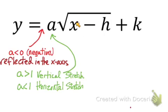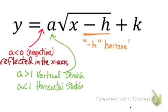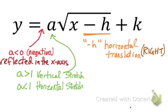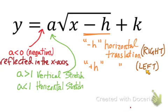Let's look at what happens when we add or subtract from the x value inside the square root — in the radicand. If we have a minus h, meaning you literally see a minus and then a number, that means we have a horizontal translation going to the right. Think of it as opposite — so if you see x minus 5, you're moving the graph to the right by 5 units. If you see a plus h, then it's a horizontal translation to the left.